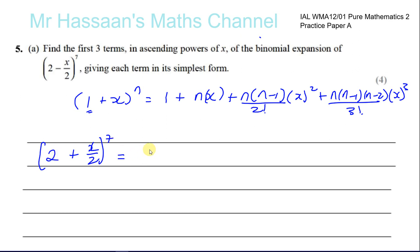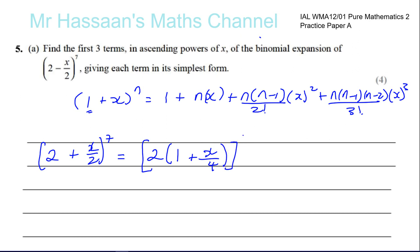Taking out the 2, I'll be left with a 1 here. 2 times 1 is 2. I've also got to take it out of the second term. What times 2 gives me x over 2? Well, x over 4. So 2 times x over 4 gives x over 2. So inside the bracket I have 1 plus x over 4, and all of that is raised to the power of 7. This gives 2 times (1 + x/4) all to the power of 7.